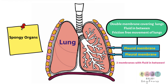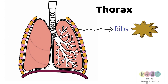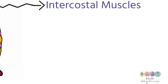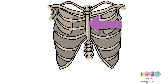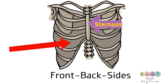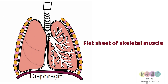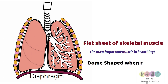The walls of the thorax are made up of the ribs — there are 12 pairs of ribs, which is really important. In between the ribs are the intercostal muscles. At the front of the rib cage is the sternum or breastbone, and the intercostal muscles wrap all the way around to the back where you find the vertebrae. The base of the thorax is made up of the diaphragm, which is a flat sheet of skeletal muscle — the most important muscle in breathing. When it's relaxed and not contracting, it is dome-shaped.